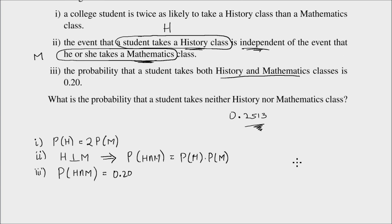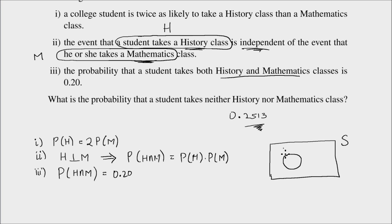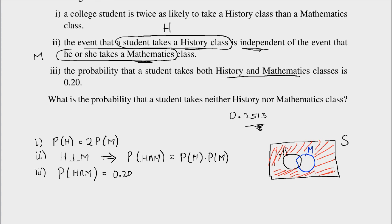Now, the question is to find the following. Let me use a Venn diagram. Let's say that's the sample space. Let me say that's event H, and let's say I have event M here. What I need to find is the probability of a student taking neither history nor mathematics. That is the region outside of the union of H and M — the region (H ∪ M) complement — and I need to find the probability of that.